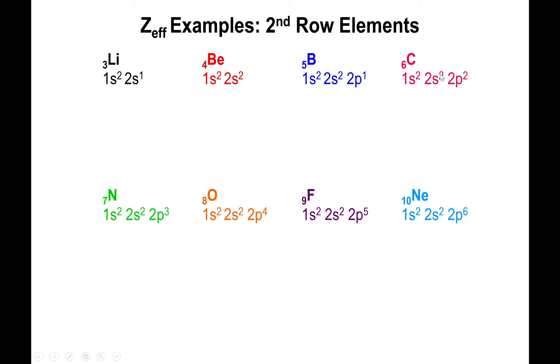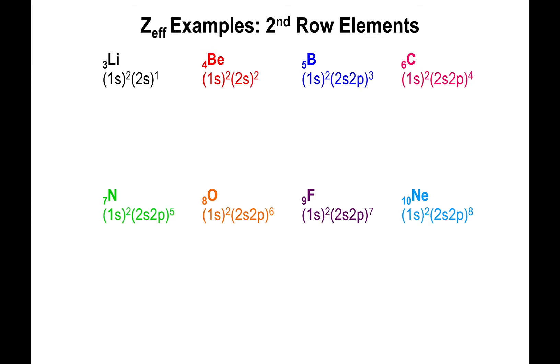Because everything is going in increasing order of n, and within the same values of n we are going in increasing order of l—from s to p to d to f—we are basically okay with the second portion of Slater's rules. What we do now is group the s and p's of the same energy level together. We have 3 electrons for boron in the 2s2p group, 4 in carbon, 5 in nitrogen, 6 in oxygen, 7 in fluorine, and 8 for neon.